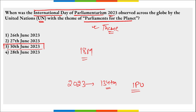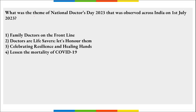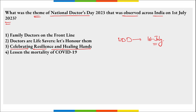What was the theme of National Doctor's Day observed across India on 1st July 2023? The theme is 'Celebrating Resilience and Healing Hands.' National Doctor's Day is observed on 1st of July and the national observance is led by IMA, that is the Indian Medical Association.